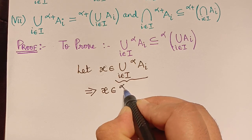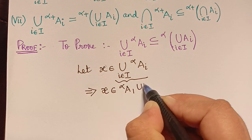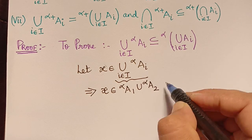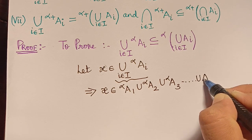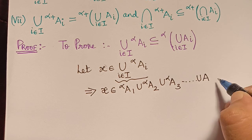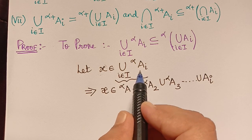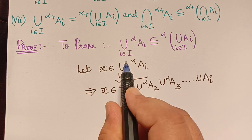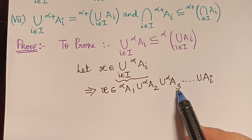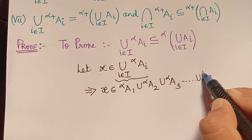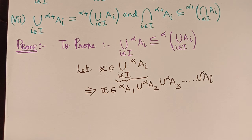Expanding this, we write: x is an element of the alpha cut of A_1 union alpha cut of A_2 union alpha cut of A_3, and so on. In general, x belongs to the union of alpha cut of A_1, alpha cut of A_2, alpha cut of A_3, up to alpha cut of A_i, where i ranges over the infinite index set capital I.